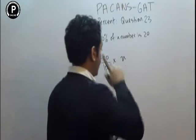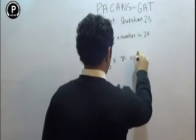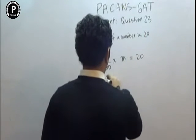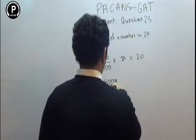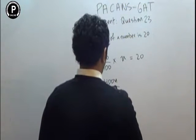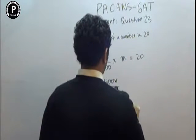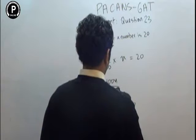400 over 100 times x is equal to 20, which gives us 400x over 100. This simplifies to 4x is equal to 20, so x is equal to 5.